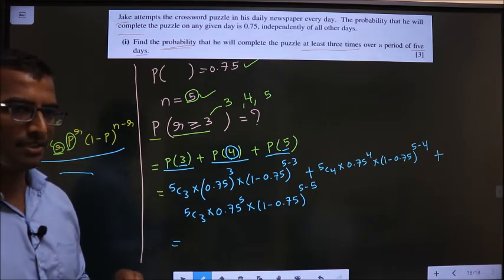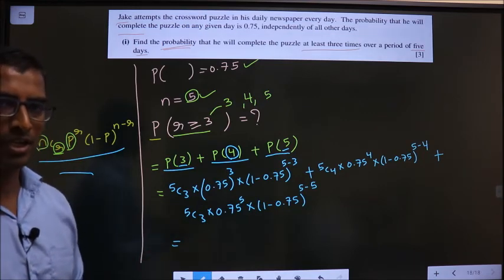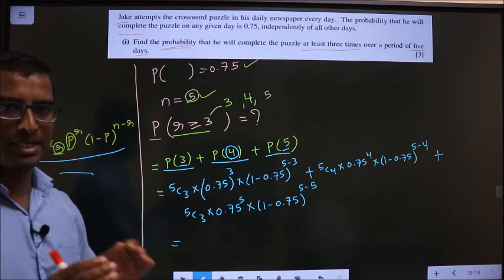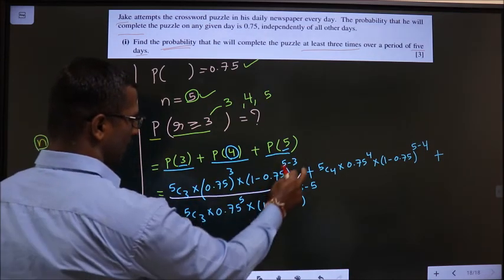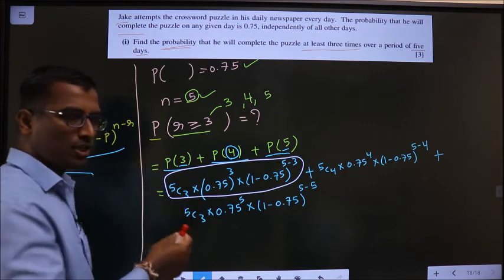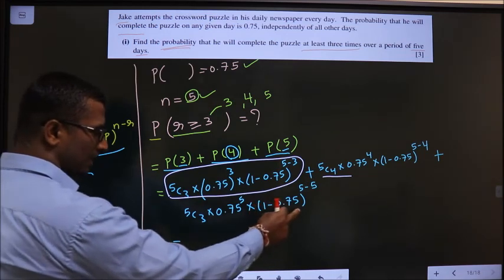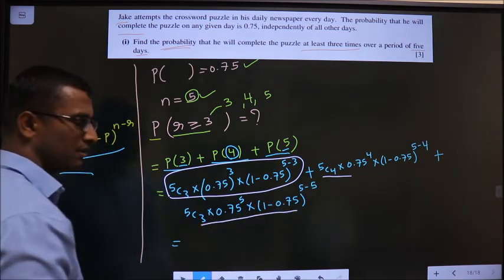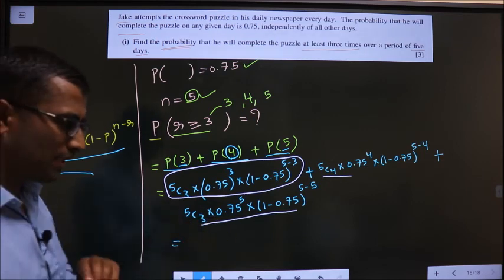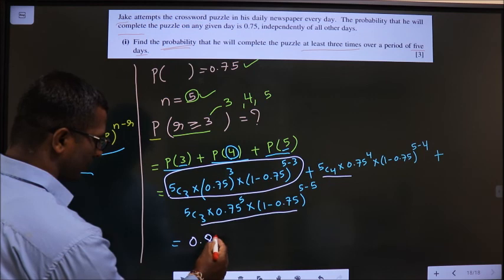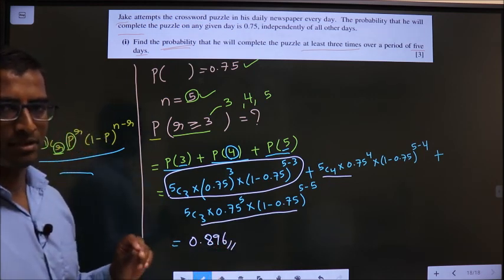Now here the difficulty is, I cannot put all the 3 at once in the calculator. So what I will do is add them piece by piece. First I will put this in the calculator. To the answer whatever I get, I add this one. Again to the answer whatever I get, I add this one. So your final answer, once you have added all the 3, should be 0.896.